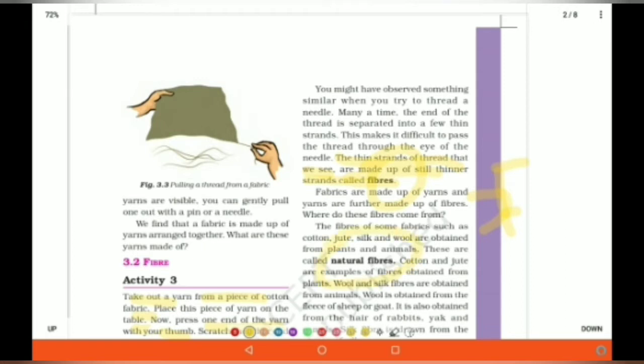The first one is natural fibers. The natural fibers are the fibers which we get from nature like plants and animals like cotton, jute, silk, wool, etc.